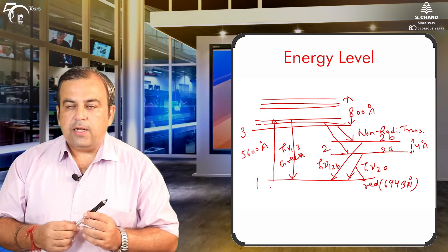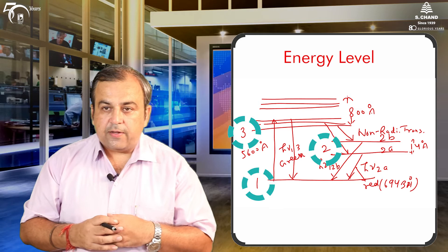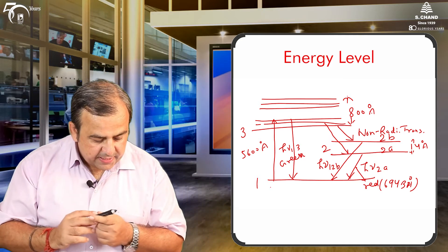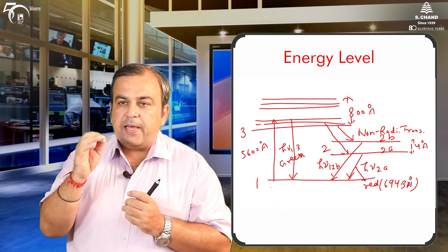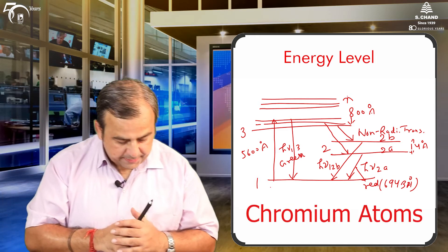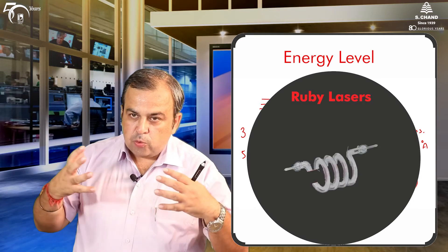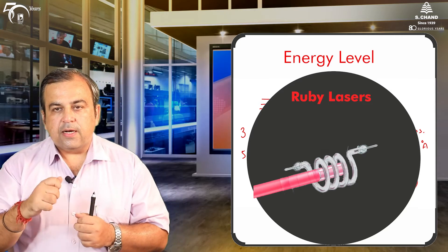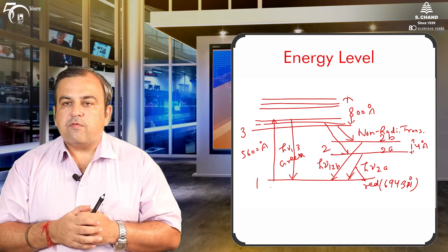Looking at the energy level diagram, levels one, two, and three represent the energy levels of the chromium atom — a characteristic property of chromium. When light from the flash tube falls upon the Ruby rod, the chromium atoms absorb the green component, having a wavelength of 5600 Ångströms, exciting from level one to level three. Level three also has a wavelength difference of 800 Ångströms.